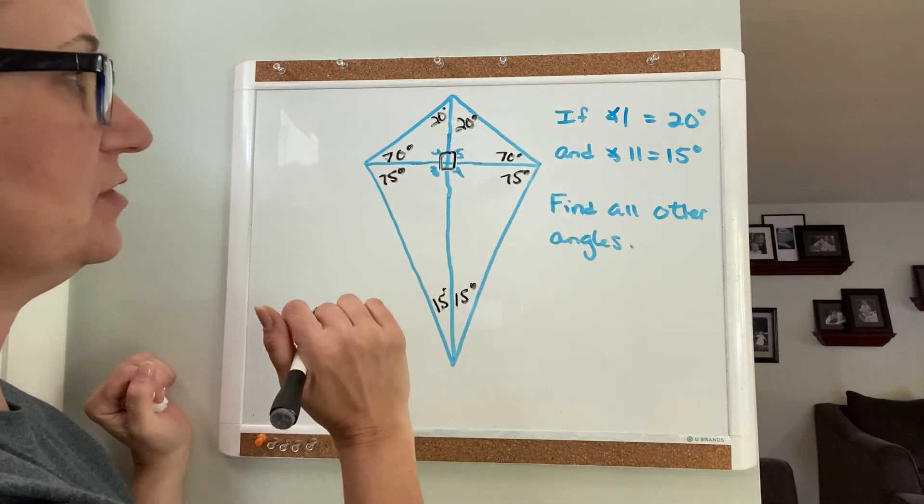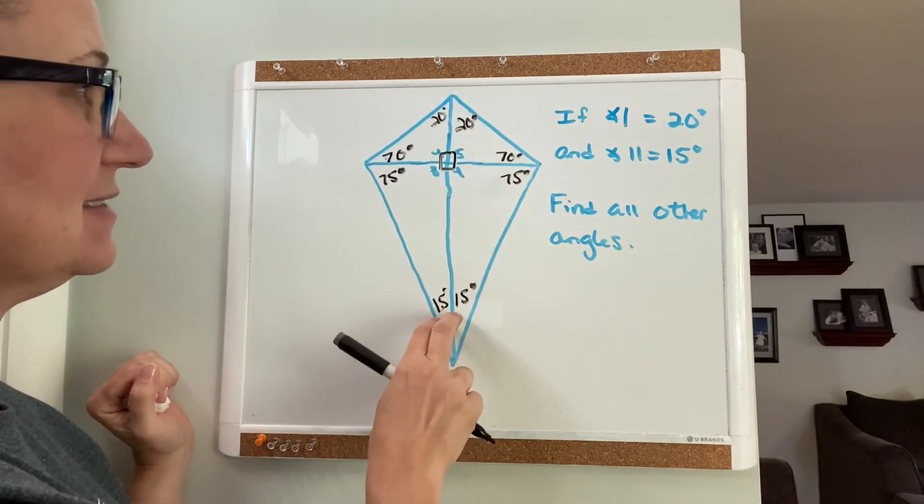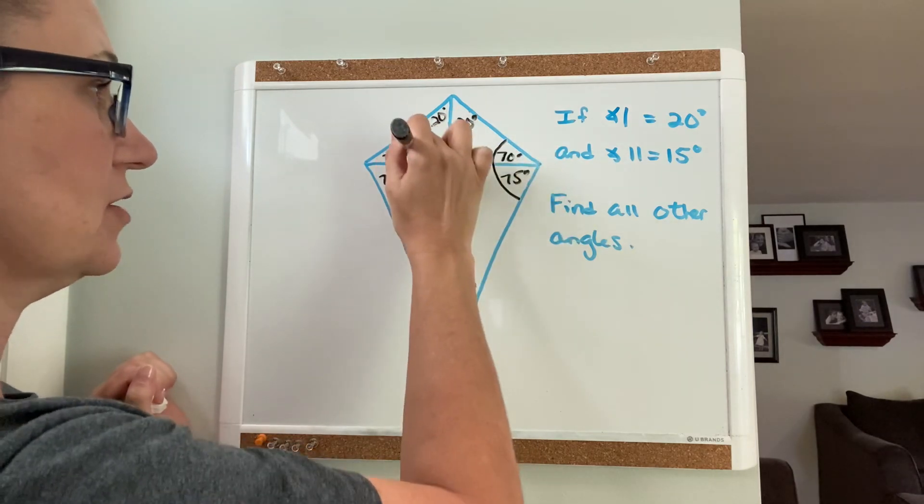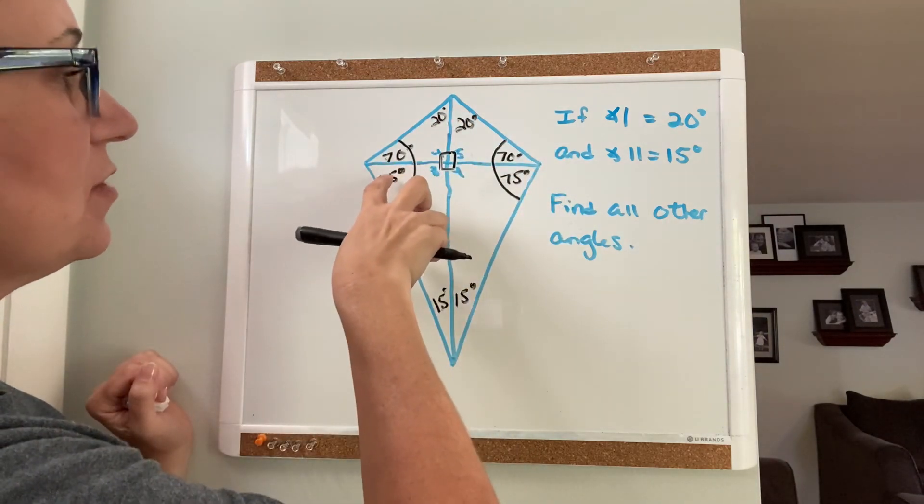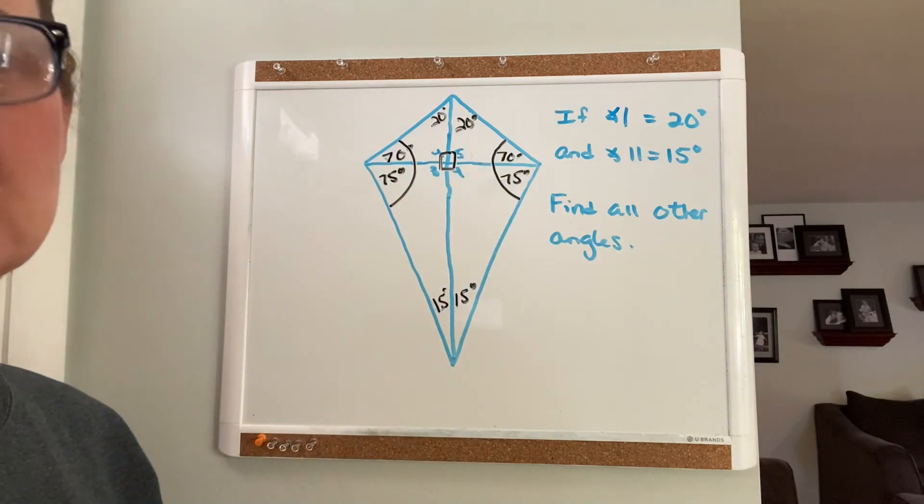Each triangle should add up to 180 degrees. These two angles are bisected. These two angles, if you look at the properties I gave you, are congruent, so each of those is 145 degrees. That's how you do that problem.